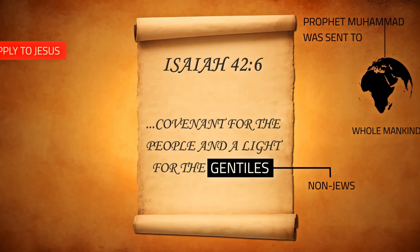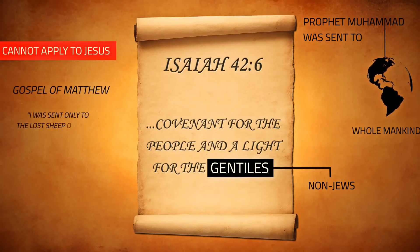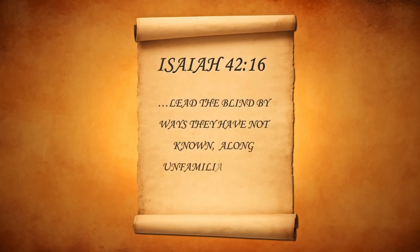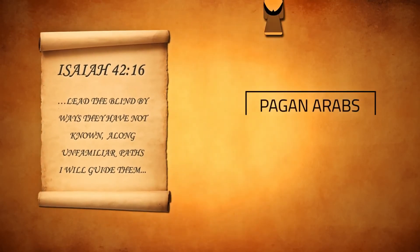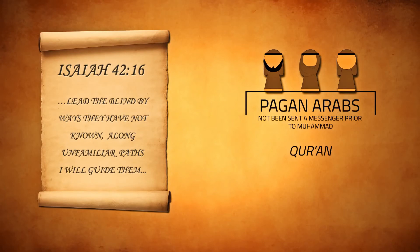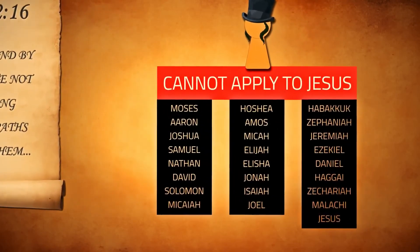The verse in Isaiah cannot apply to Jesus, because in the Gospel of Matthew, Jesus said, 'I was sent only to the lost sheep of Israel.' In Isaiah, God further states that he will lead the blind by ways they have not known, along unfamiliar paths. The pagan Arabs at the time of the Prophet Muhammad fit this description perfectly, because they had not been sent a messenger prior to Muhammad. The Quran bears witness to this — God states that Muhammad was sent to warn people to whom no warner has come before. This cannot apply to Jesus, because his people, the Israelites, had already received a multitude of prophets from God.